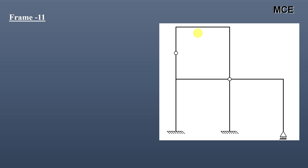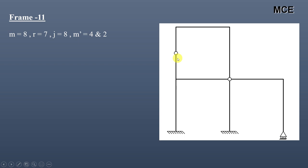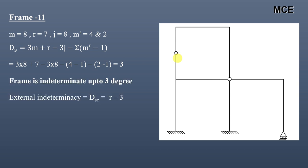For Frame 11, we can see it has a total of 8 members, 7 reactions, 8 joints, and 2 internal hinges. The number of members meeting at one internal hinge is 4, and at the other is 2, so m′ = 4 and 2. The value of ds = 3, so this frame is indeterminate to 3 degrees. External indeterminacy = 7 − 3 = 4. Internal indeterminacy = 3 − 4 = −1.